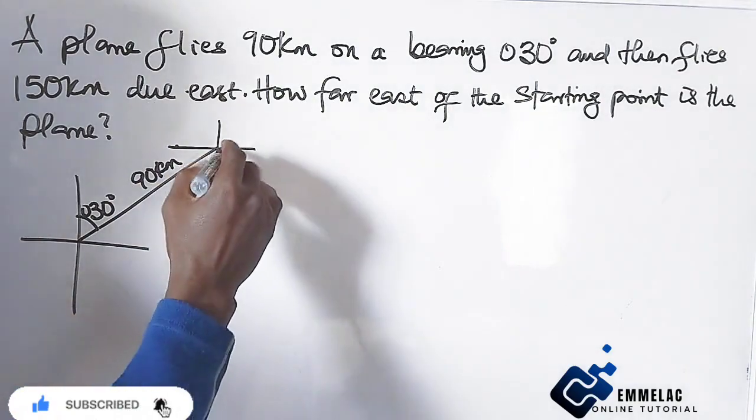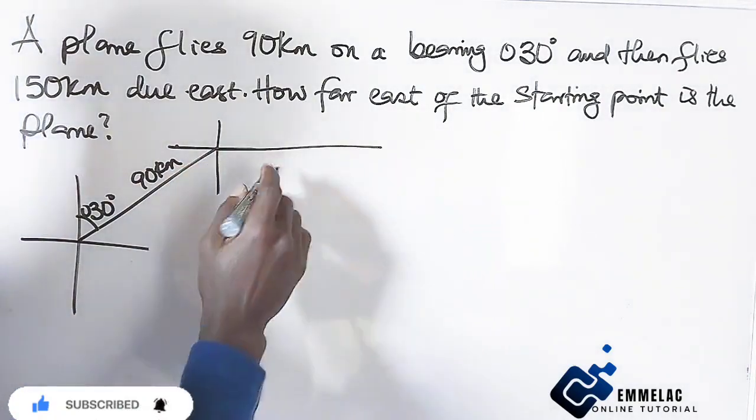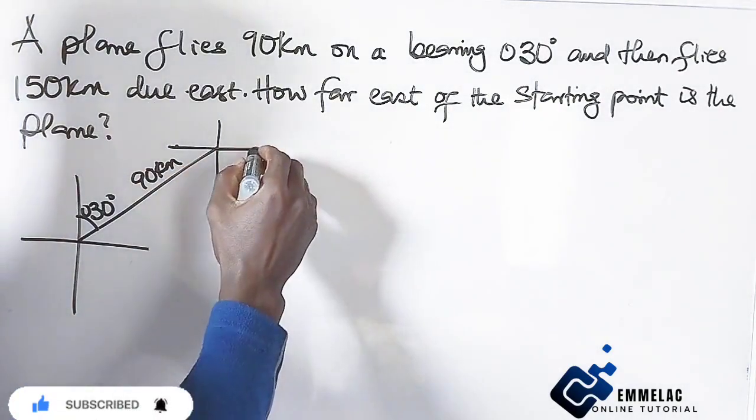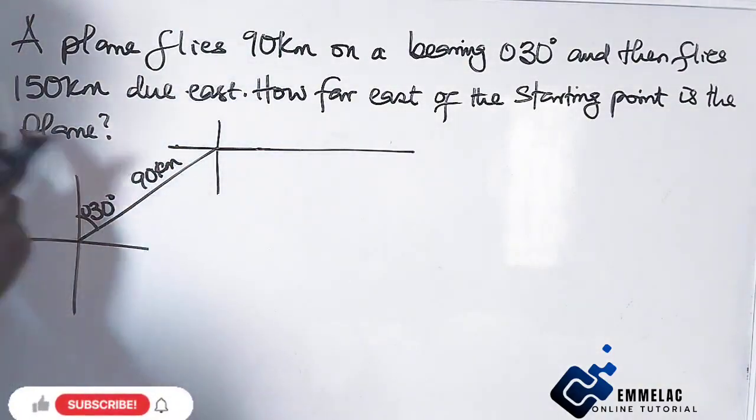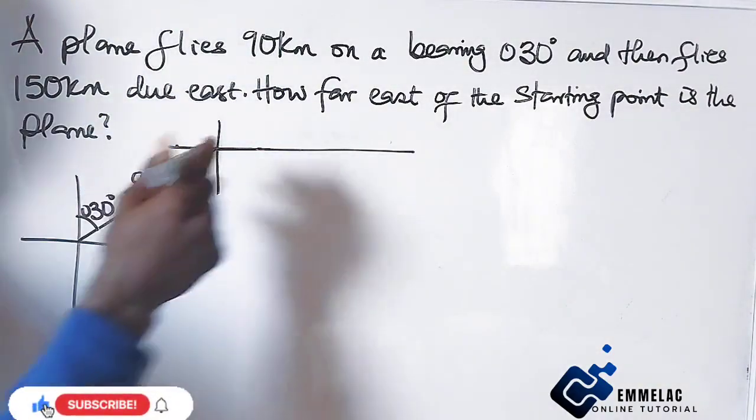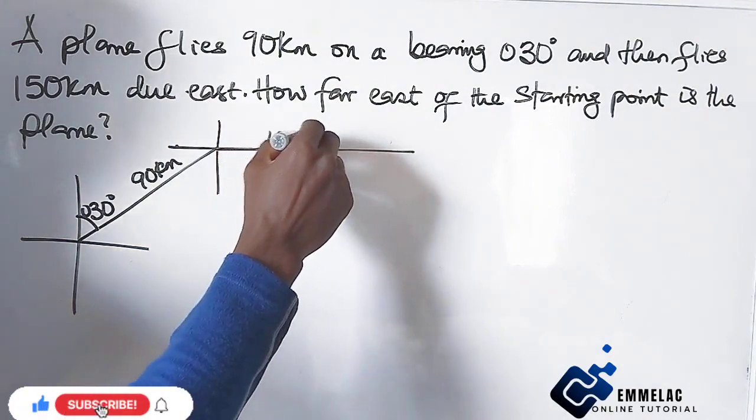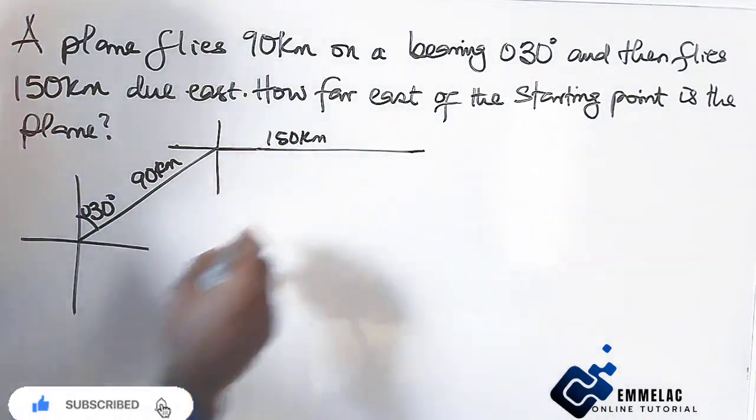Then due east. Since it is due east, I will draw it straight, just like that. Now take note that 150 should be longer than 90, so here you have 150, far longer.